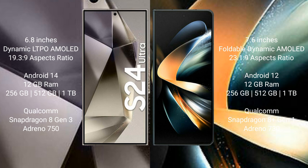The Samsung Galaxy S24 Ultra comes with 12GB RAM and 256GB, 512GB, or 1TB internal storage, a Qualcomm Snapdragon 8 Gen 3 processor, and GPU Adreno 750.